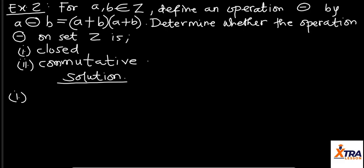We have for A and B which are elements of set Z, define an operation ⊕ by A⊕B = (A+B)(A+B). Then determine whether the operation on set Z is: (i) closed. From our knowledge of closure property we can approach this question, and (ii) commutative.